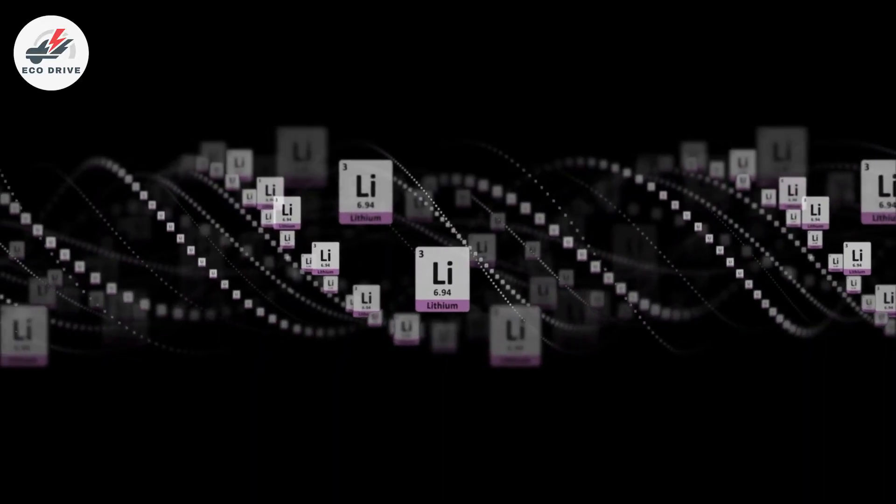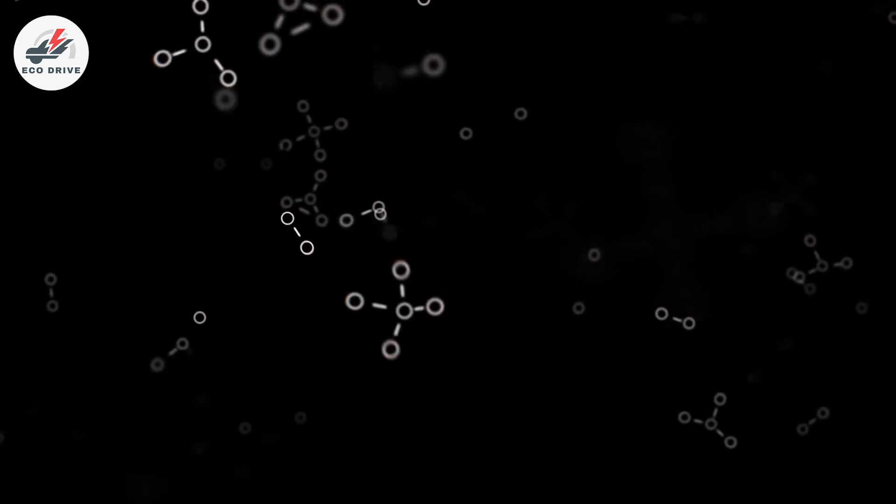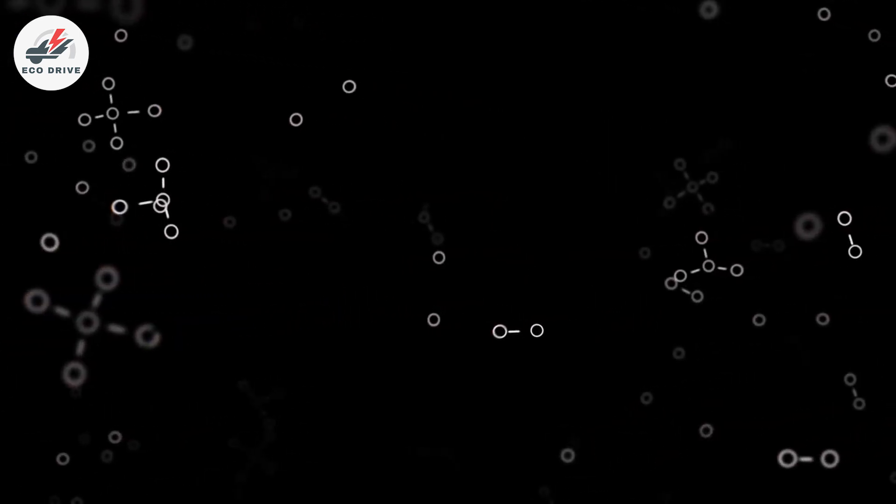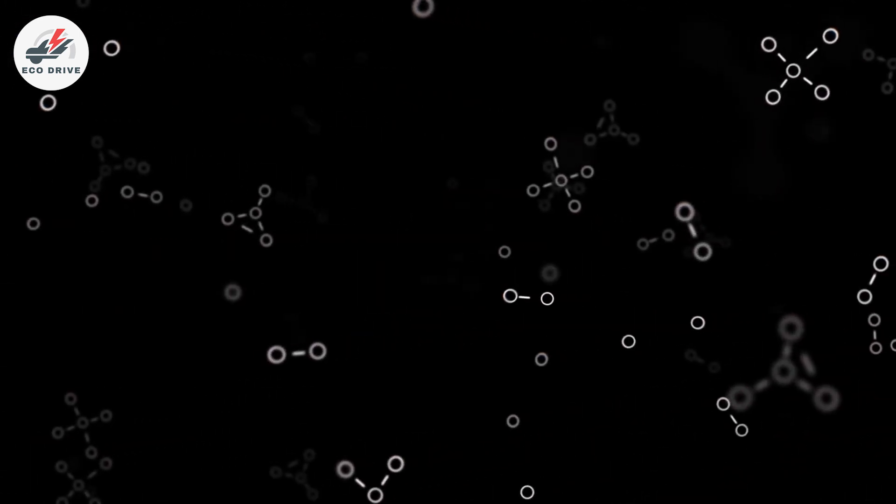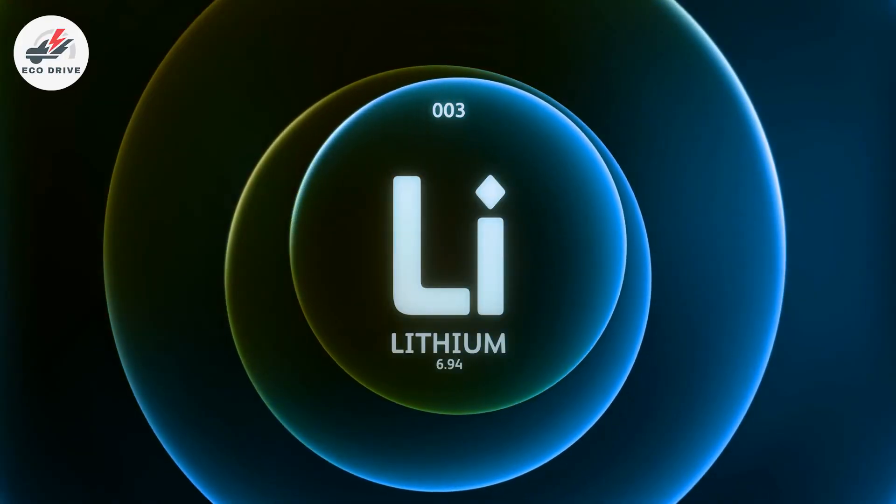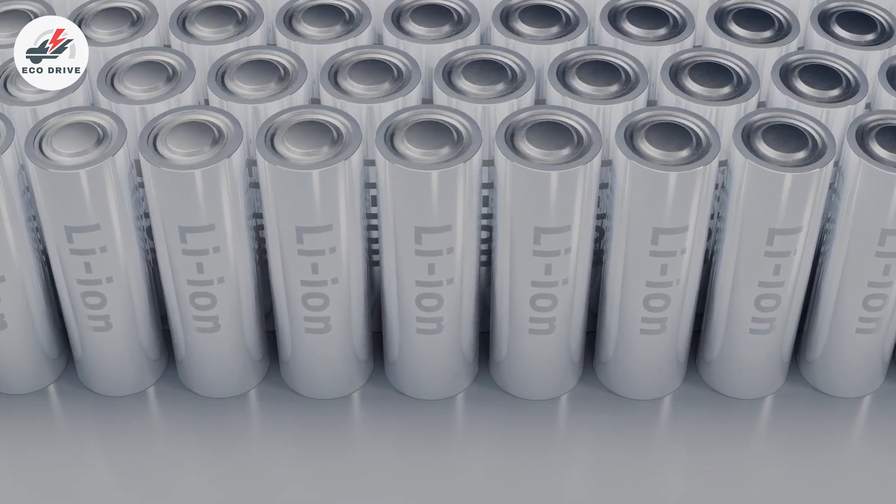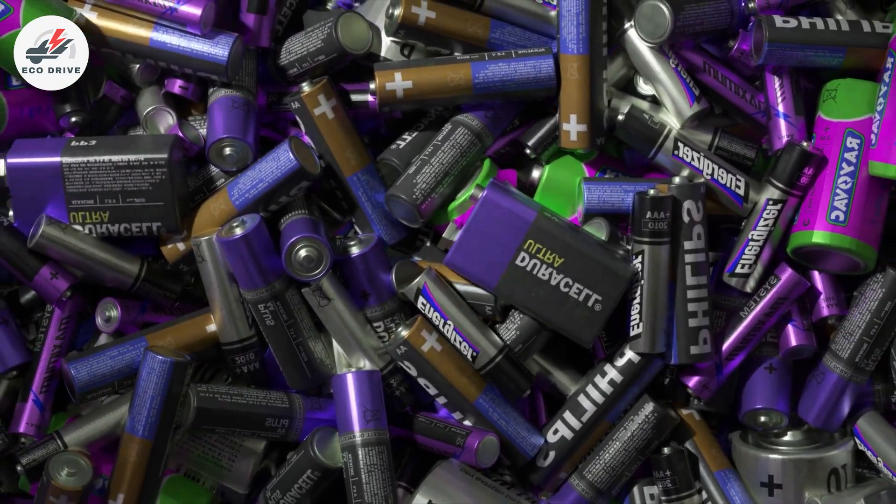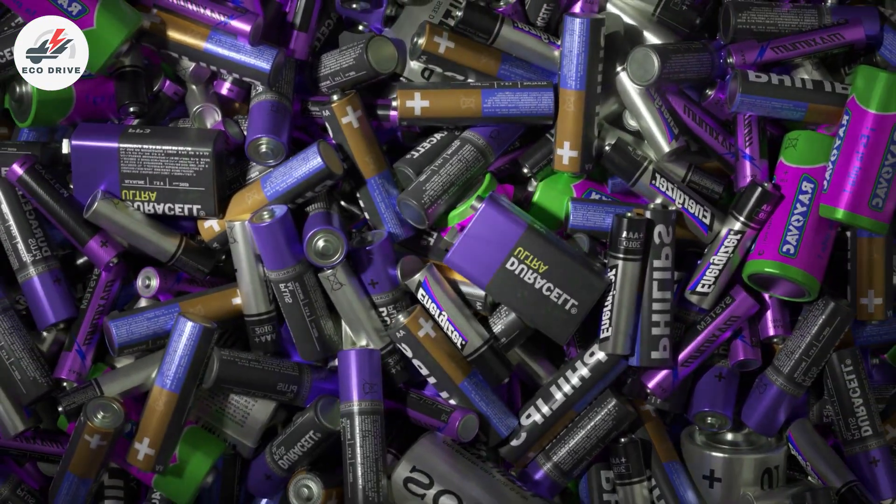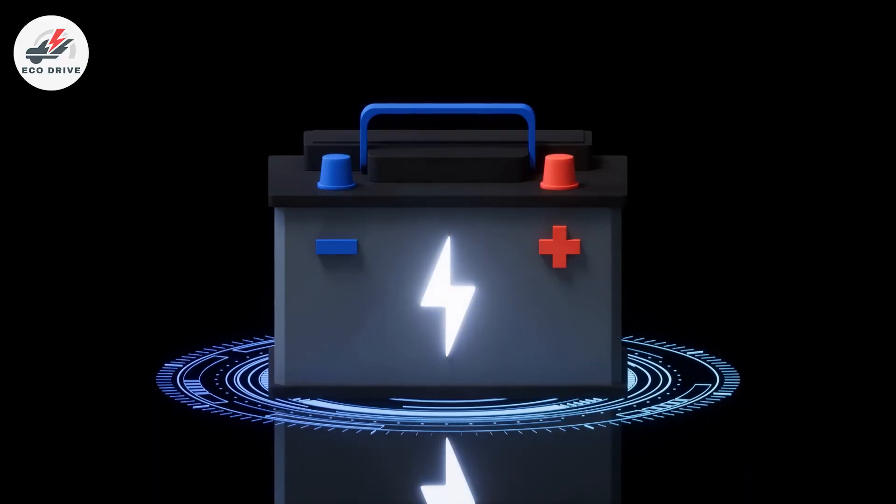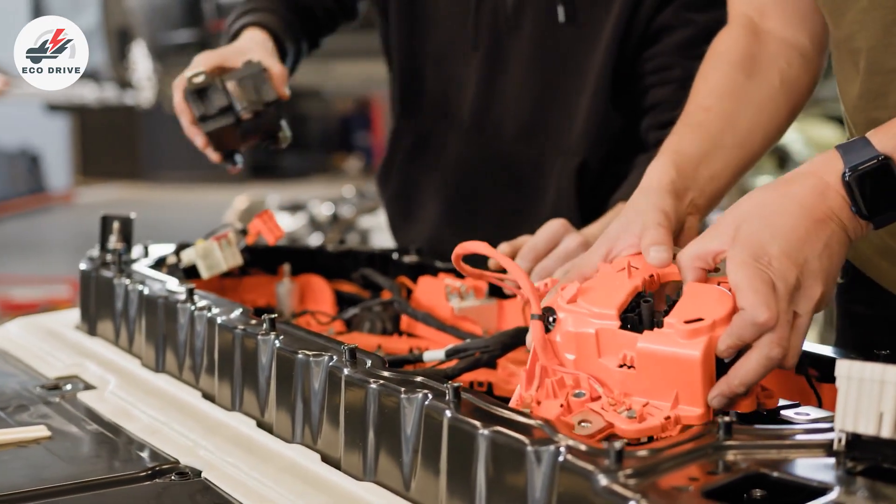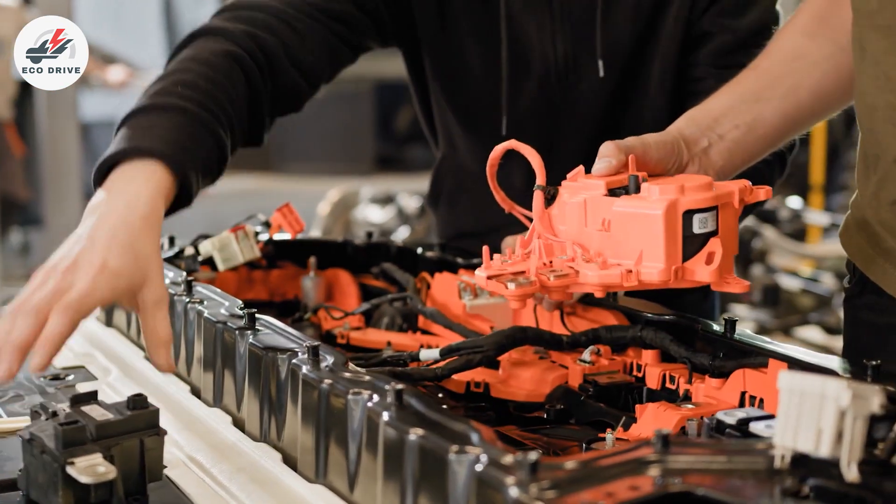This new substance, a lithium-conducting solid, is the result of a creative elemental combination that permits effective ion flow. Its reliance on lithium, a resource that has given rise to ethical and environmental concerns, is what makes it even more amazing. This material solves some of the most pressing problems with conventional battery technology by using less lithium. This change may result in batteries that are sourced more ethically and sustainably.